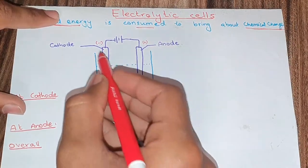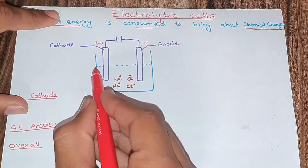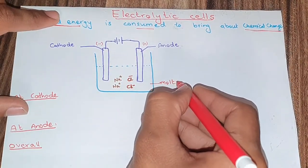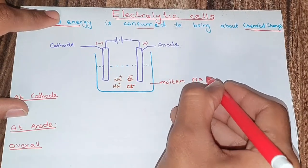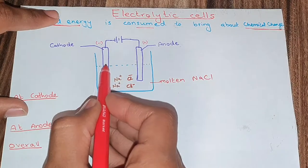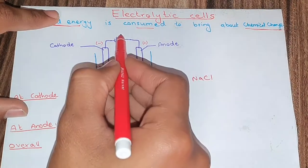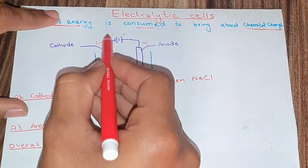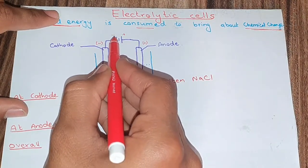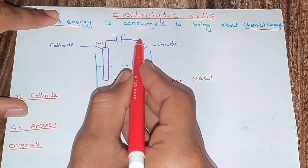First, take a beaker and put molten sodium chloride in it. Here, molten sodium chloride is present. There is one electrode here and another electrode, and they are connected to the positive and negative terminals of a battery.